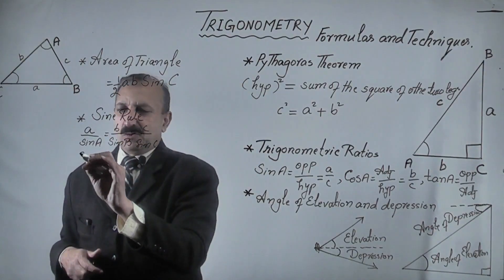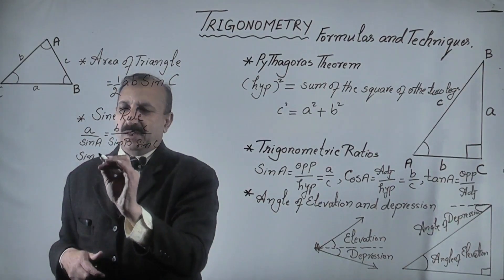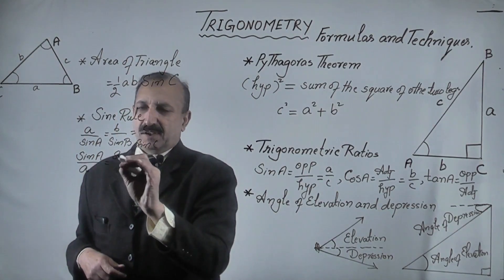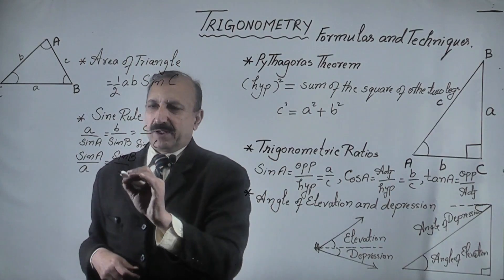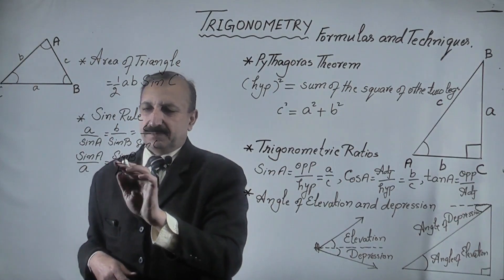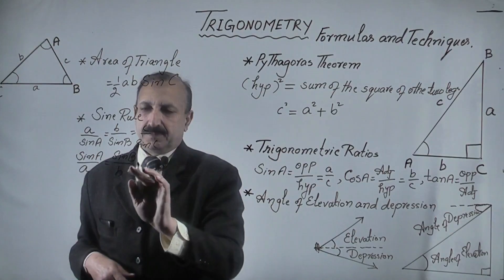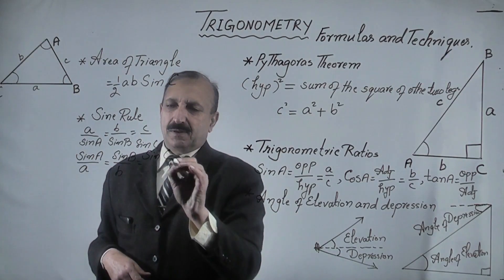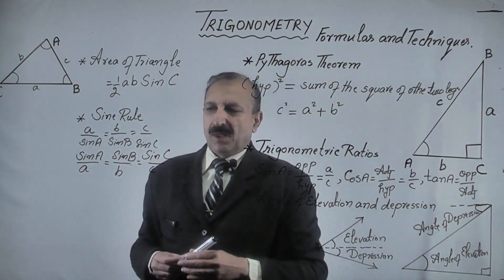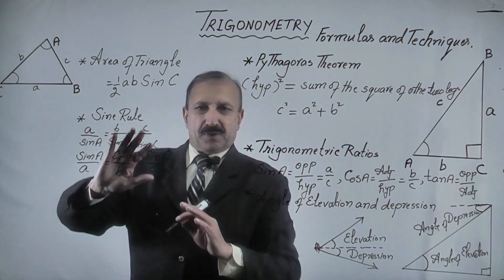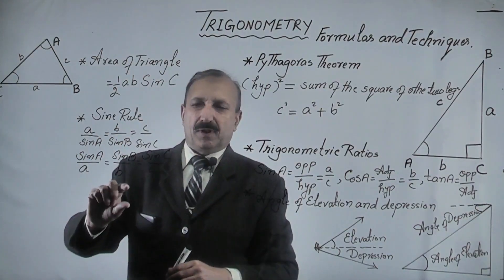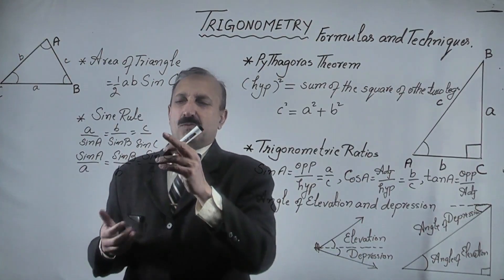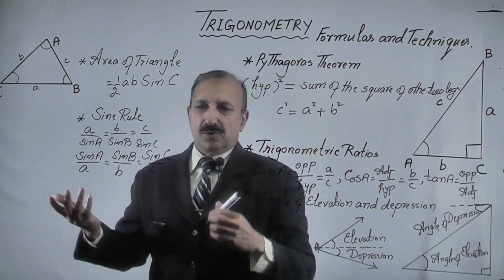Its second form is: you may use sine A over a equals sine B over b equals sine C over c. These two forms are 100% correct. You can use either one. Normally students use the first form, and book writers suggest it more, but they are 100% the same. You can use any one of these two. This is the sine rule connecting sides and angles of a non-right-angle triangle.